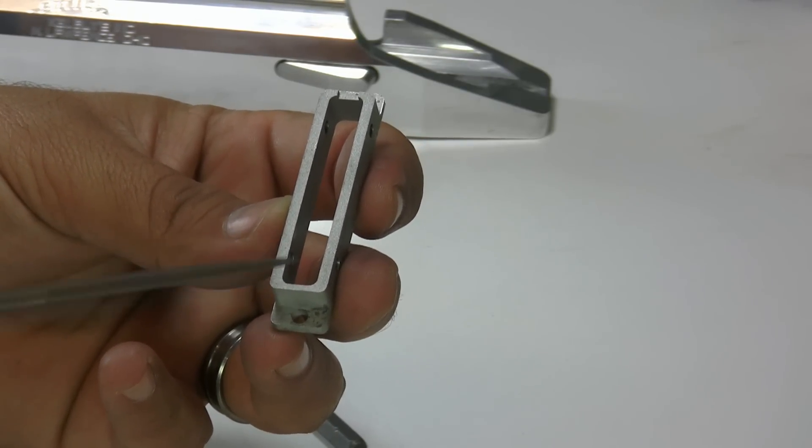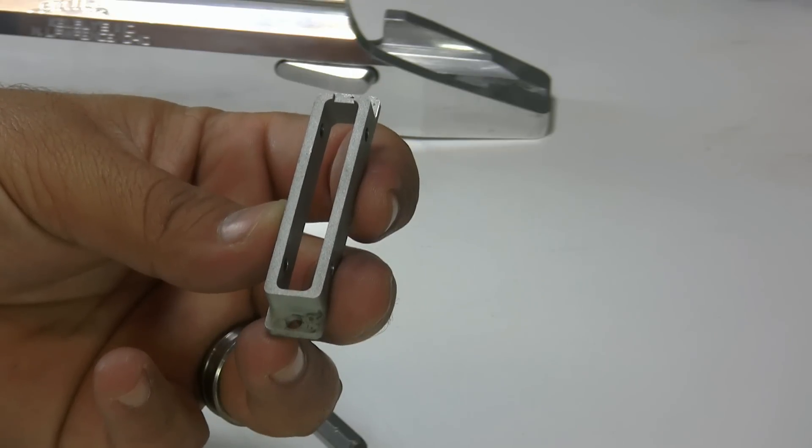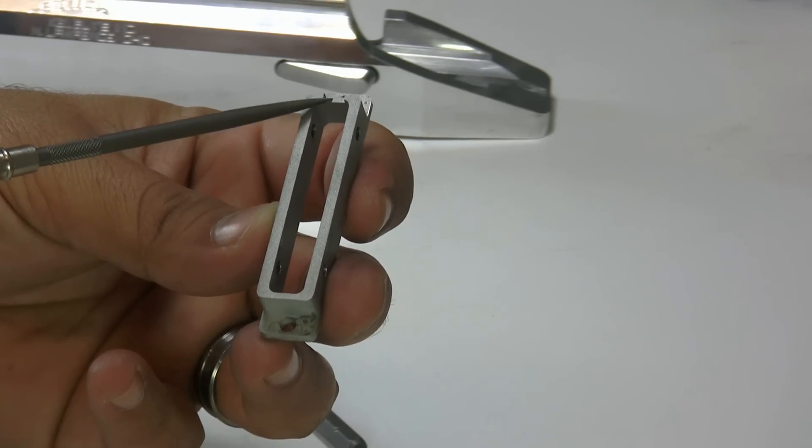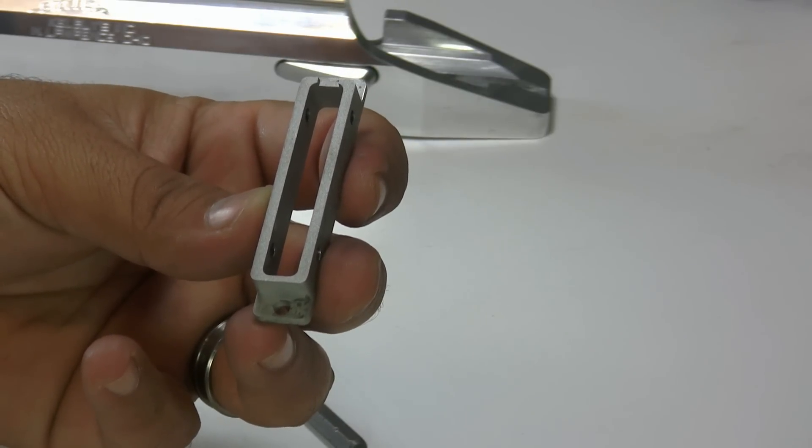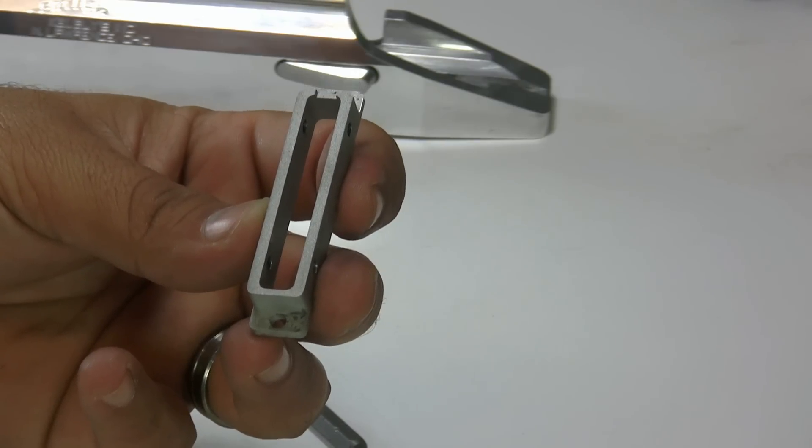The easiest way to tell which way the hanger goes into action is that there's this notch on there. This notch goes to the back. So make sure you get that on there properly. Otherwise, your bolt is going to get hung up on there.